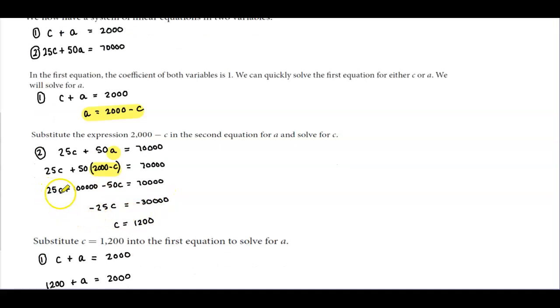We have 25C, and we're going to distribute the 50 to both terms. 50 times 2,000 is 100,000, and minus 50 times C is -50C, which equals 70,000.